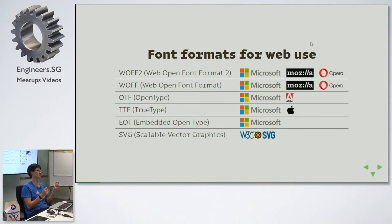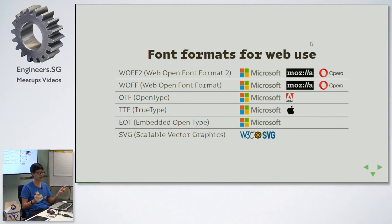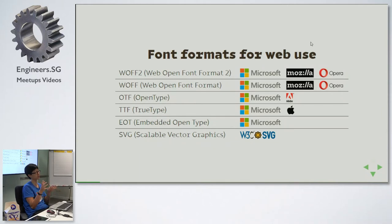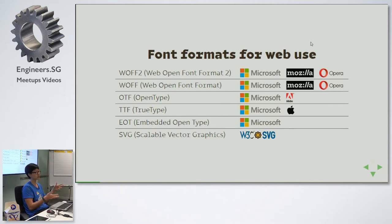So in 1975 — I might be getting the date wrong — Donald Knuth created something for the TeX system that would generate compressed bitmap fonts. But John Warnock, who was the founder of Adobe, actually came up with PostScript, which is what most of us are more familiar with, and that was the first vector-based font. Vector-based fonts are an excellent idea, and that's the same technology we're still using nowadays.